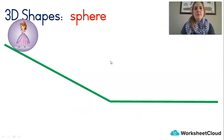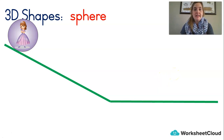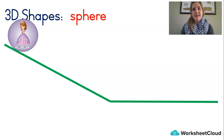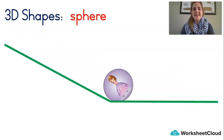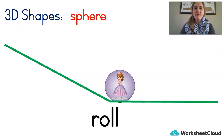Now, if you put a sphere shape — a ball — on a hill, what do you think it will do? Will it stay there? Will it slide down? Or will it roll down? Let's find out. There it goes — it hits the bottom. What did it do? It rolled! A sphere can roll. It's not going to slide because the sides are round, so it rolls down a hill.